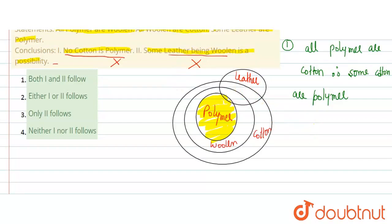Kyun? Some leather, yaha par dekhe, kuch leather mere kya hai polymer hai, and sabhi polymer mere woolen hai. So second conclusion dekhe: some leather are polymer and all polymer are woolen. Kuch sabhi polymer kya hai mere woolen hai, therefore.